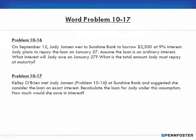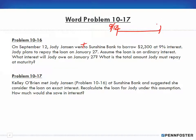I also included problem 10-16. On September 12th, Jody Jansen went to Sunshine Bank to borrow $2,300 at nine percent interest. Jody plans to repay the loan on January 27th. The loan uses ordinary interest, which means we use 360 days for time.